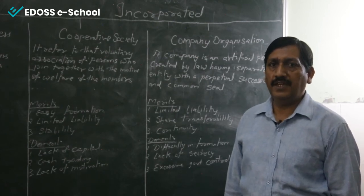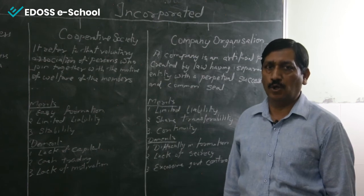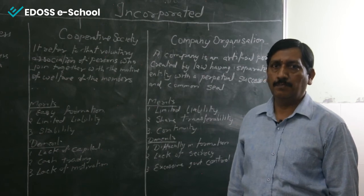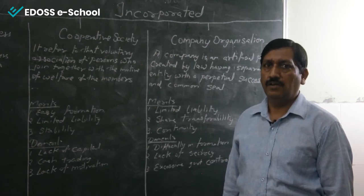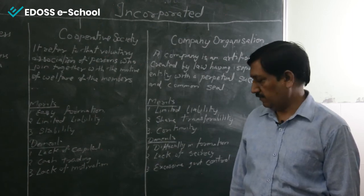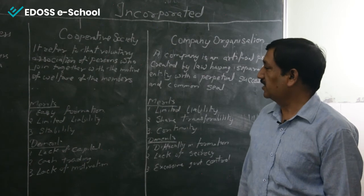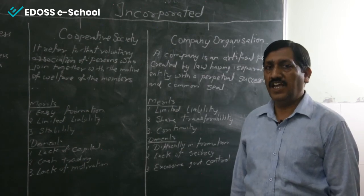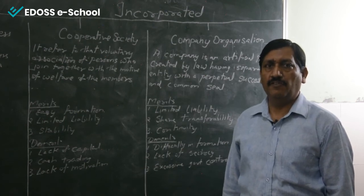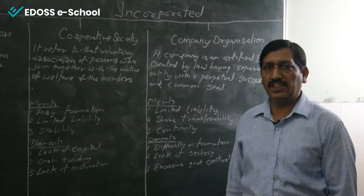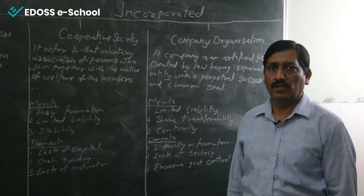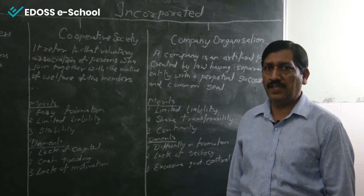Demerits of company organization: Difficulty in formation — after fulfilling many formalities, only then can the company be incorporated. Registration is compulsory; unless the company is registered, business cannot be started. Lack of secrecy — they must publish all details about the company: whatever profit they earn, the way they do business, and all balance sheets must be published and shown to every shareholder.